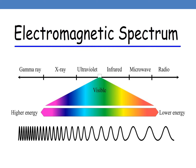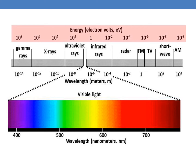Here you can see the electromagnetic spectrum: gamma rays, X-rays, ultraviolet rays, infrared rays, microwave and radio waves. Between the ultraviolet and infrared rays is the visible light range, which in terms of nanometers ranges from 400 to 700 nanometers.